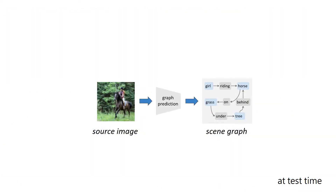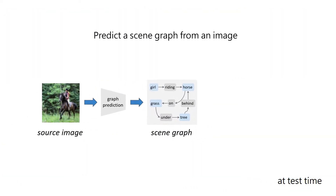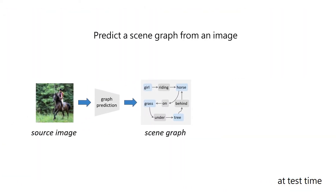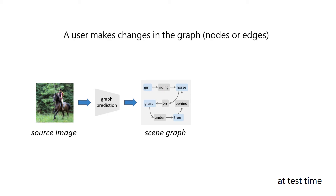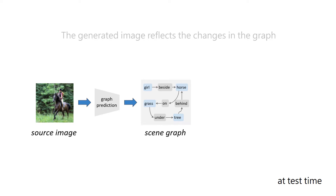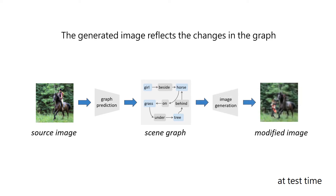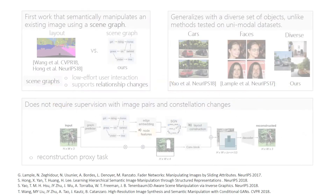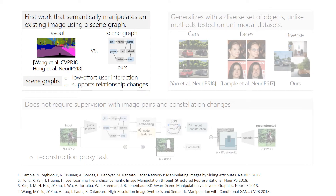Let's have a look at the inference pipeline. Given an image, we predict a scene graph. A user makes changes in the nodes or edges as desired. The new object constellations are then reflected in the generated image. Compared to a semantic layout, scene graphs provide a lower effort user interface and can additionally support relationship changes.